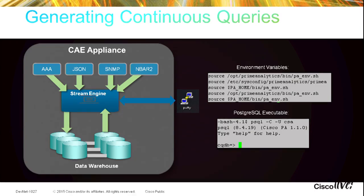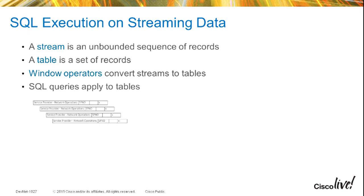This is our CAE appliance, which we can deploy on-premises or send data into the cloud. These are the inputs I mentioned, plus contextual data from third-party vendors. These are the environment variables in the Postgres executable, which I'm going to show you. For developers in the crowd, you can create a front-end with Java or Python. And it doesn't have to be Connected Analytics for Events — it can be connected streaming analytics for any type of venue or service you want.